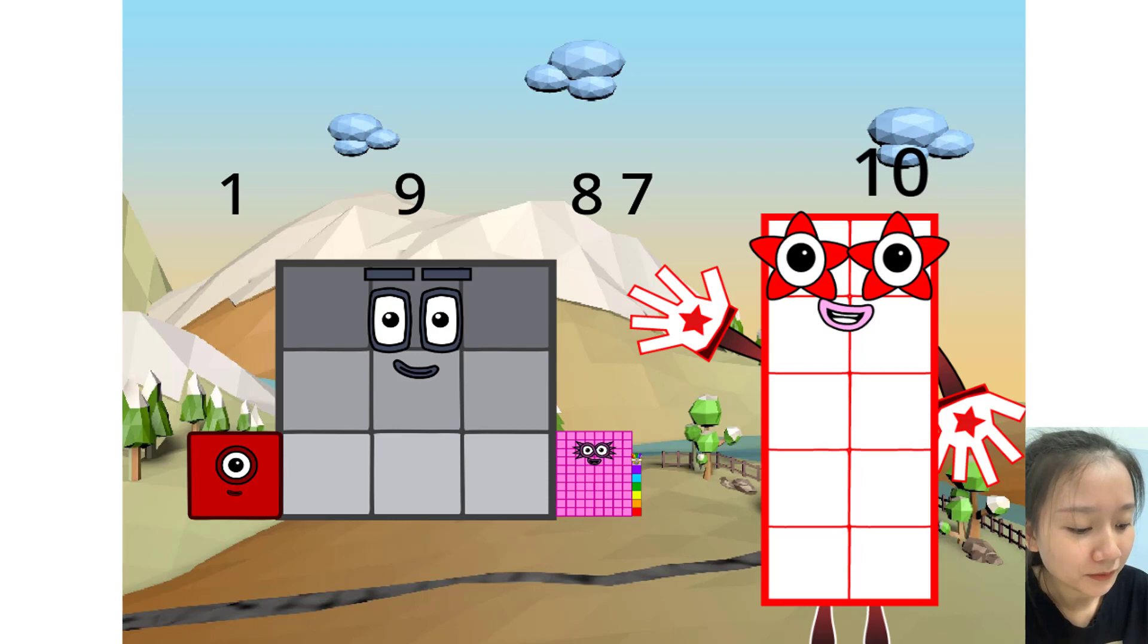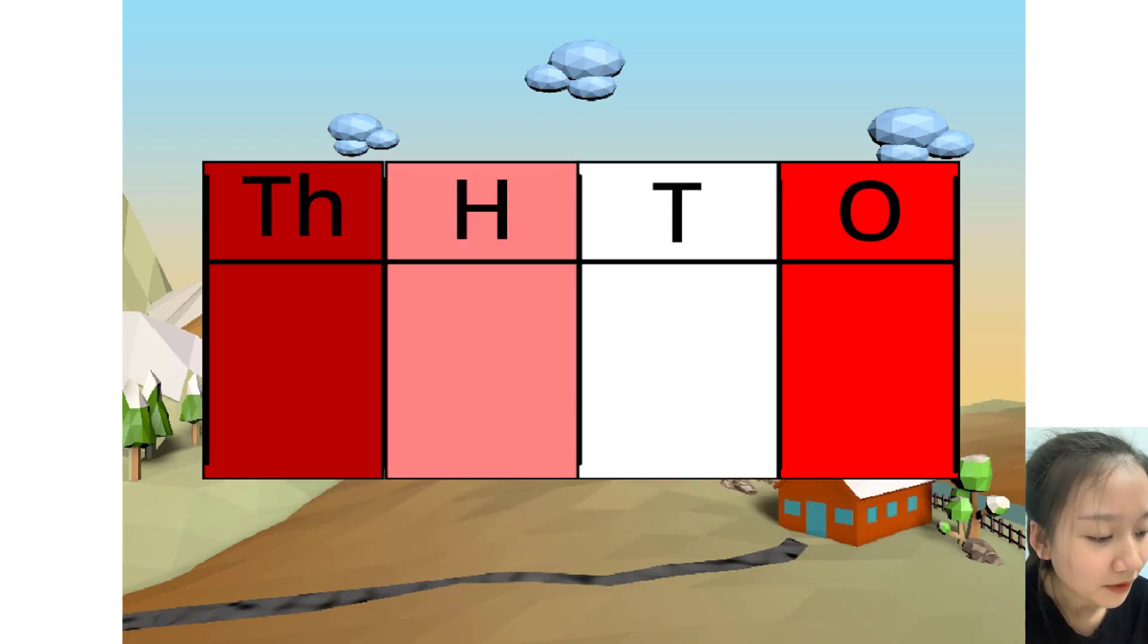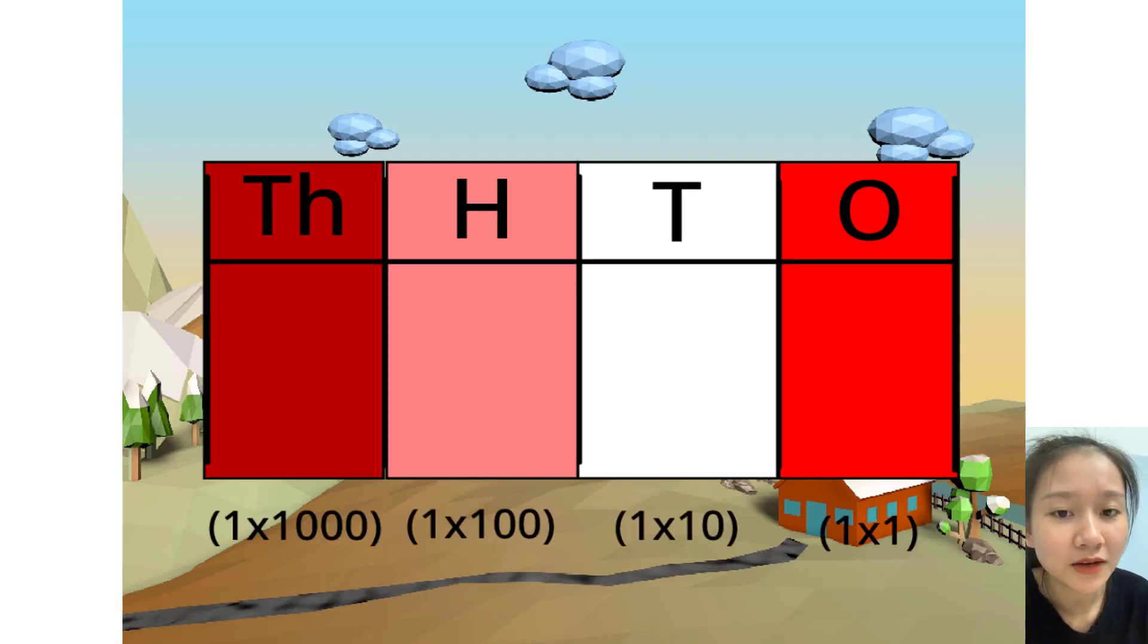Let me carry on with the first method. Do you notice anything with this table? Correct. The number multiplies by 10 each time it goes left one column. Because it multiplies by 10 each time, we call this system base 10.